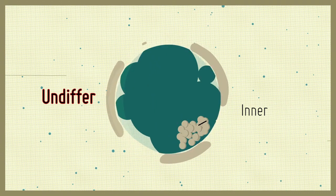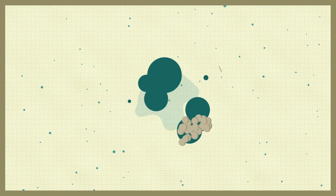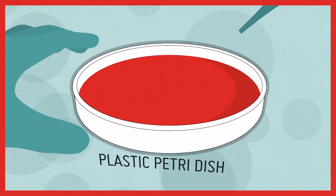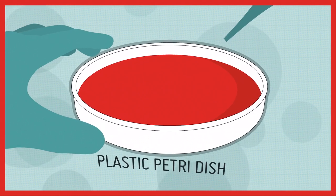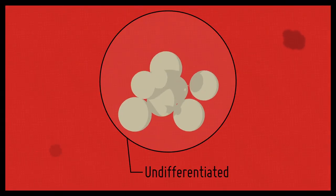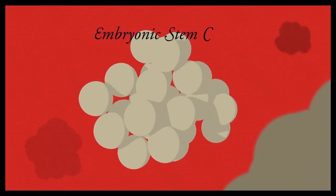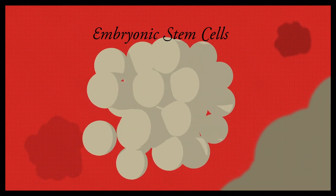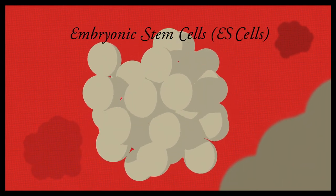If the cells of the inner cell mass are isolated, they can grow indefinitely in a plastic dish and maintain this undifferentiated state. These cells are known as embryonic stem cells, or ES cells.